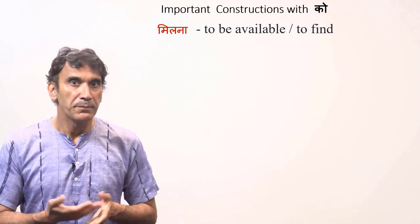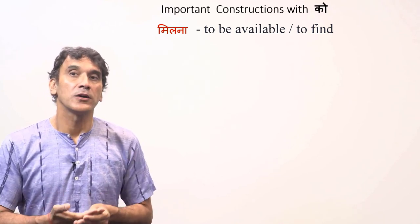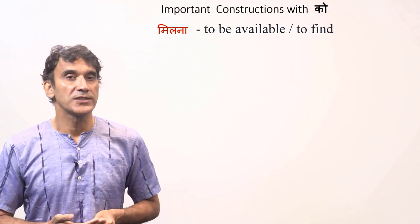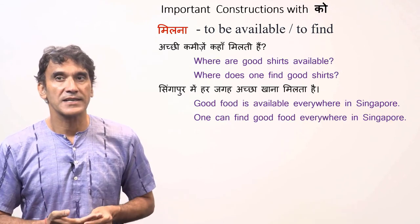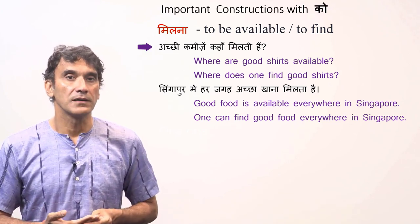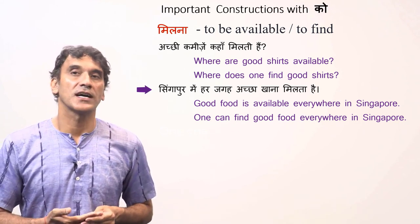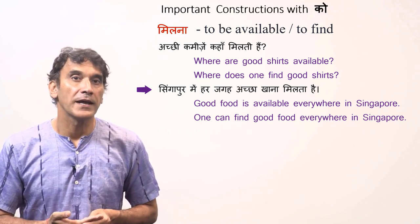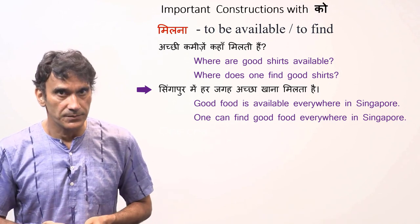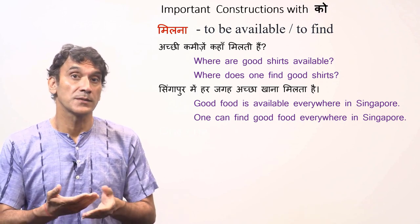Finally, milna with the meaning of to be available or to find — specifically in the sense of where one can find something. In such instances, the logical subjects are usually dropped. Achhi kameez ne kaha milti hai — Where are good shirts available? Or: Where does one find good shirts? Singapore mein har jaga achha khana milta hai — Good food is available everywhere in Singapore, or: One can find good food everywhere in Singapore. In both sentences, the subject is general and redundant, so there is no subject in the sentences.